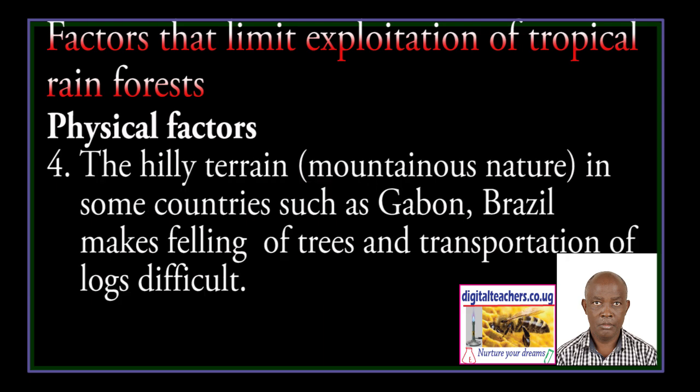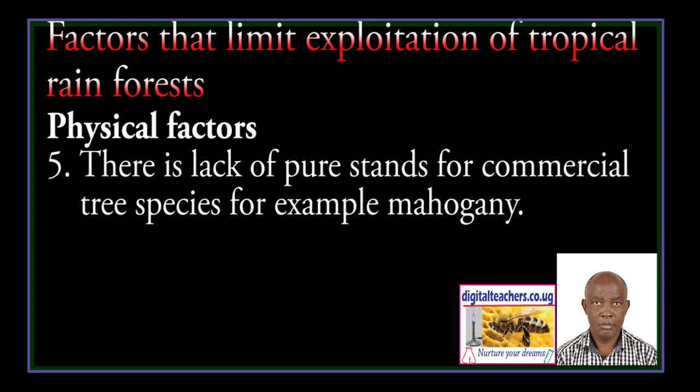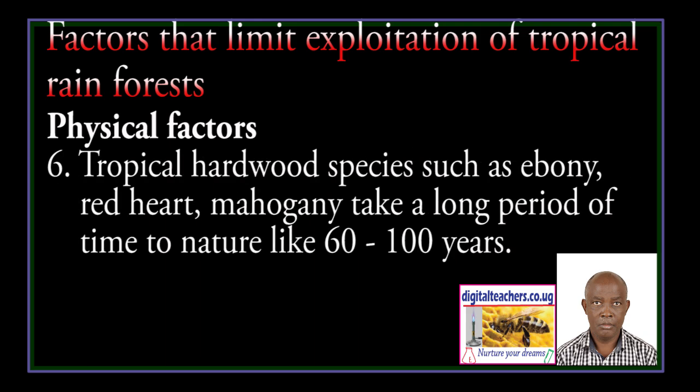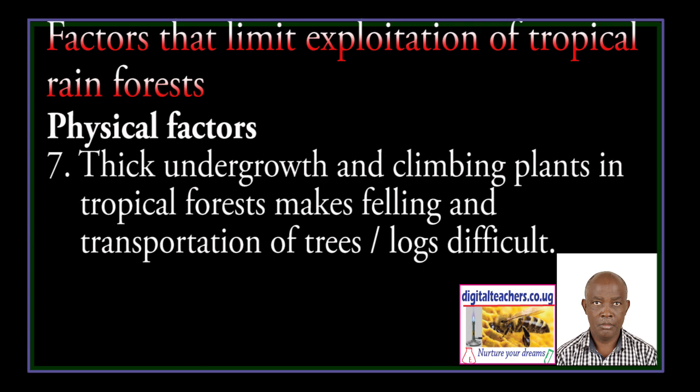The hilly and mountainous nature in some countries such as Gabon and Brazil makes felling of trees and transportation of logs difficult. There is a lack of pure stands for commercial tree species, for example Mahogany. Tropical hardwood species such as Ebony, Red Heart, and Mahogany take a long period to mature, like 60 to 100 years. Thick undergrowth and climbing plants in tropical forests make felling and transportation of logs difficult.